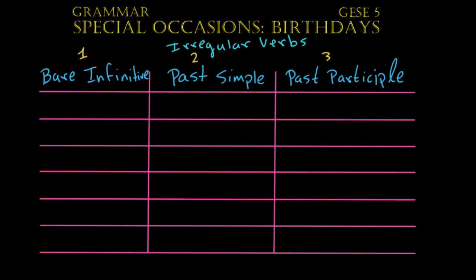One verb that we can use is bear, bore, born. Like, you might say: when were you born? I was born in April. This is probably going to be the most popular option out of the three, because we're talking about the past when we say we're born.